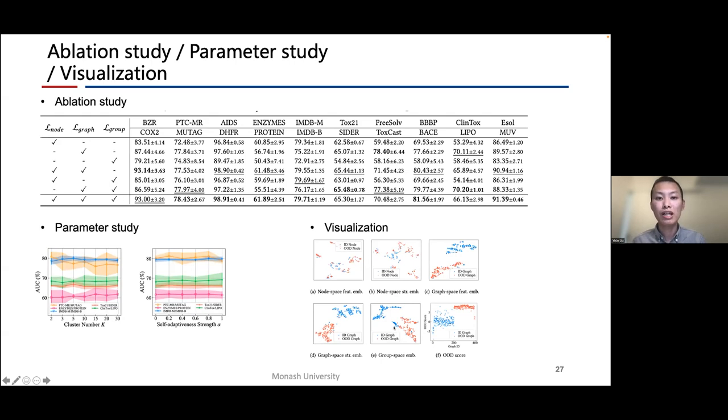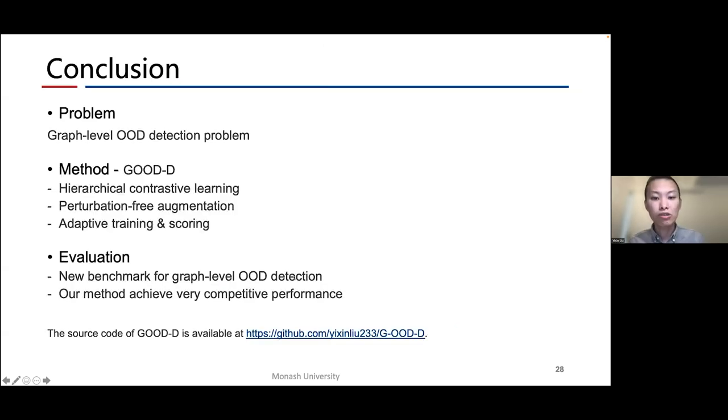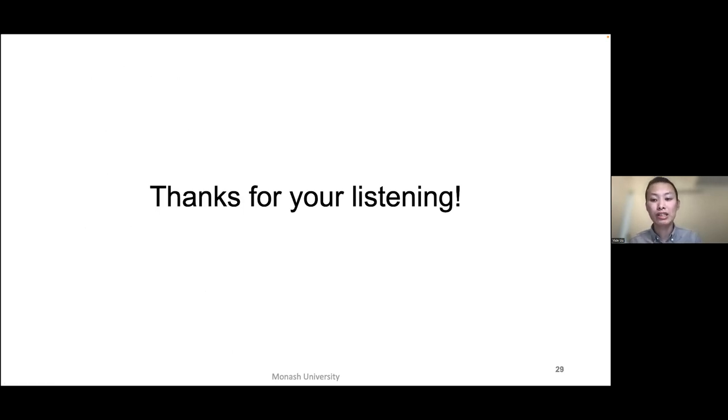To conclude today's presentation, we summarize three main contributions of our paper. First, we propose to investigate a new research problem: the graph-level out-of-distribution detection problem. Second, we propose a method, GOOD-D, to solve this problem. We have three core designs: hierarchical contrastive learning, perturbation-free augmentation, and adaptive training and scoring. For evaluation, we construct a new benchmark for this OOD detection task, and our method achieved very competitive performance. The source code is available now at GitHub. That's all of today's presentation, and thanks for your listening.